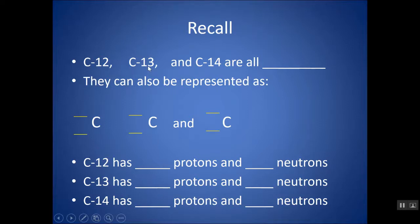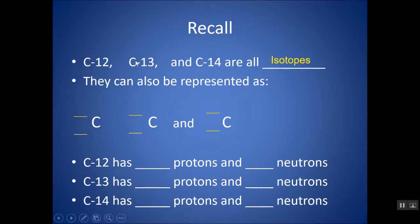C-12, C-13, and C-14 are all isotopes. They are atoms of the same element — all carbon — but they have different masses and therefore different numbers of neutrons, because we know their protons have to be the same. In order to be carbon, it has to have six protons.